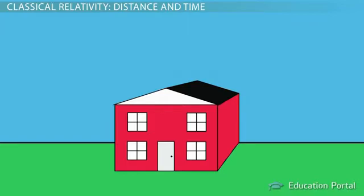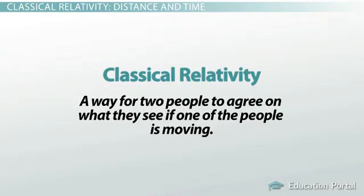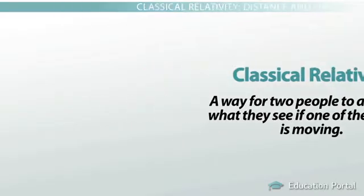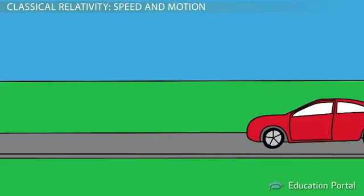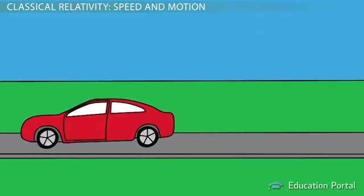Relativity gets a little more complex when motion is involved. Classical relativity provides a way for two people to agree on what they see if one of those people is moving. Two people can observe the same event as being different depending on their perspective.